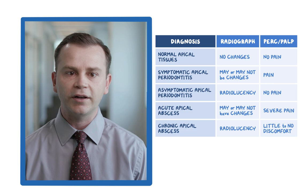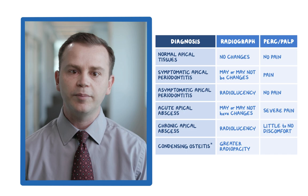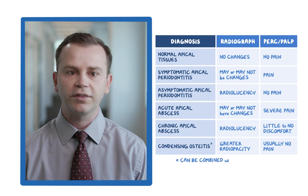Lastly, in some instances of chronic inflammation, bone proliferation can occur instead of resorption. This is called condensing osteitis, and it is observed with greater radiopacity around the apex of the tooth and usually no pain. It can, however, be combined with the other periapical diagnoses already discussed.